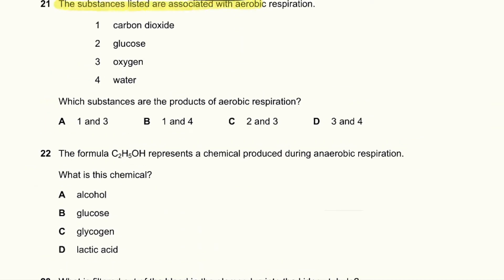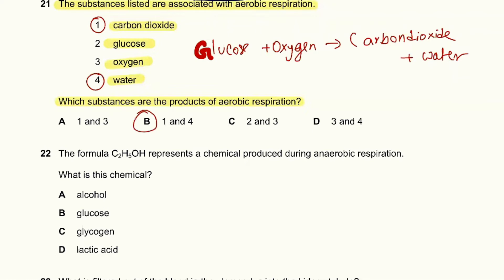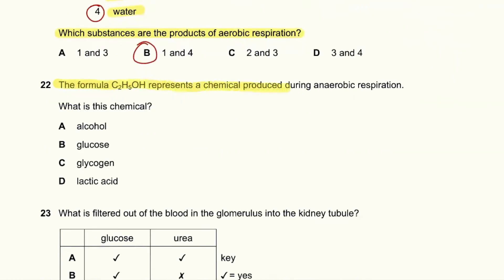Question 21: The substances listed are associated with aerobic respiration — carbon dioxide, glucose, oxygen, water. Which substances are the products of aerobic respiration? Aerobic respiration uses glucose; when glucose reacts with oxygen it gives carbon dioxide and water, plus energy used in life processes. So carbon dioxide and water are the products — numbers one and four — so B is the answer.